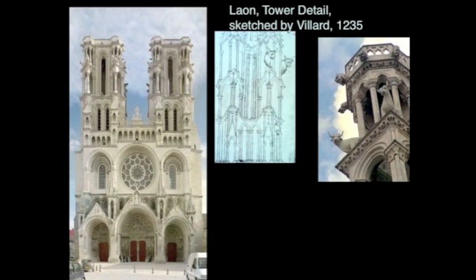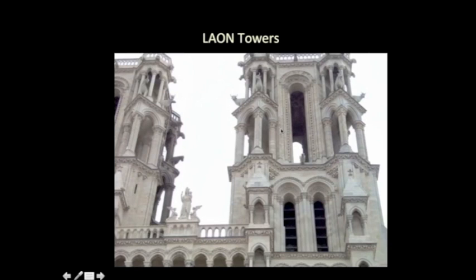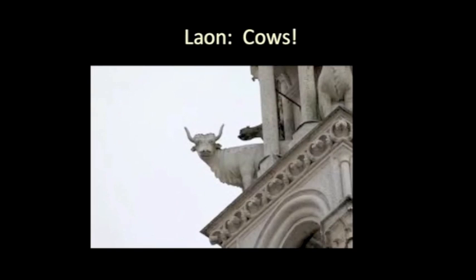Laon also has something that I find to be really great — and Villard thought it was great too, as shown in a sketch from his sketchbook. It has the most bizarre decorative program you're ever going to see in a Gothic church: it has cows. It's just a world of cows. Later on they figure out maybe we could put saints there, maybe a devil, maybe a gargoyle — but this is so early that they're just running with cows.